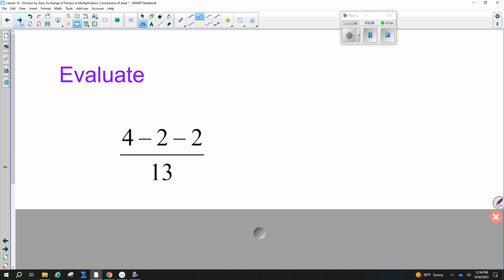All right. So let's evaluate a few of these. Four minus two minus two. What does that equal to, everyone? Zero. Out of 13, which is equal to zero. So if you have zero on the top, be sure you write equals zero.